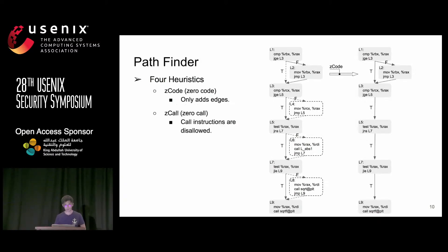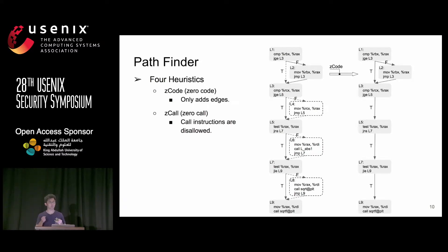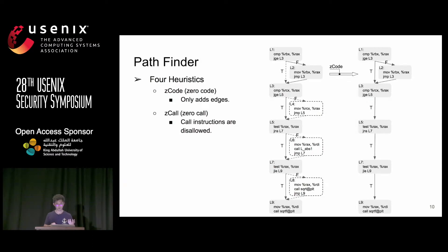The second heuristic is 'no call' — on the inferred code path, we do not allow call instructions. So inferred code can only be in the same function as some executed code. For example, for code in L4 that has no call instructions, after applying this heuristic we would include the code in L4.